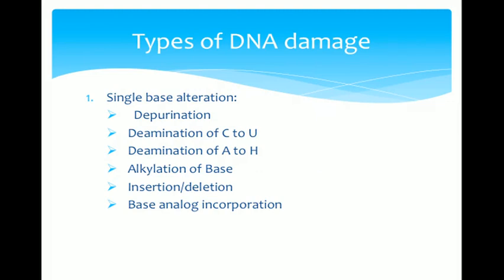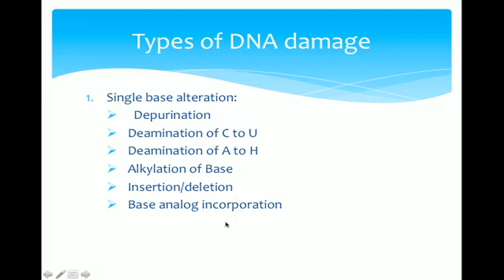Let us look at the different types of DNA damage. The first type is single base alteration: depurination (removal of a purine), deamination of cytosine to uracil (the most common — C converted to U by removing an amino group), deamination of adenine to hypoxanthine, alkylation of the bases, insertion, deletion, or base analog incorporation.